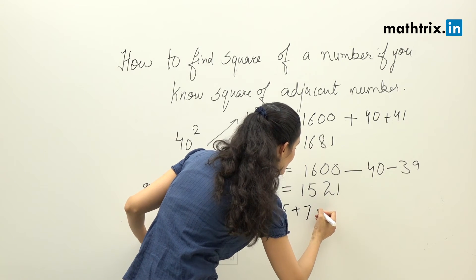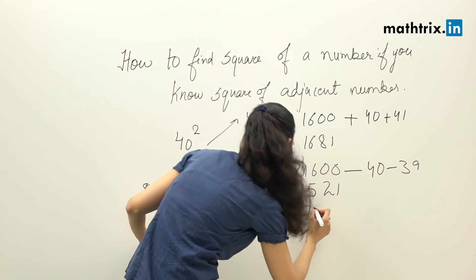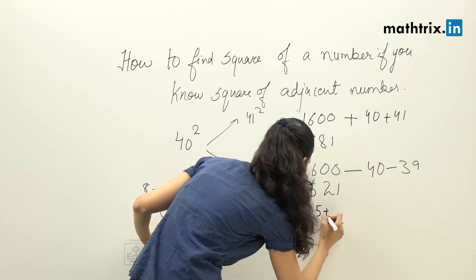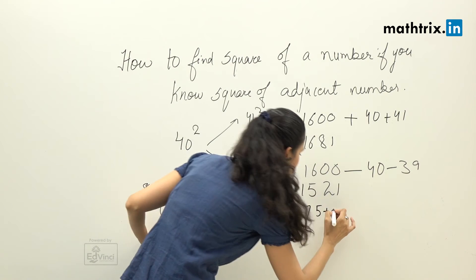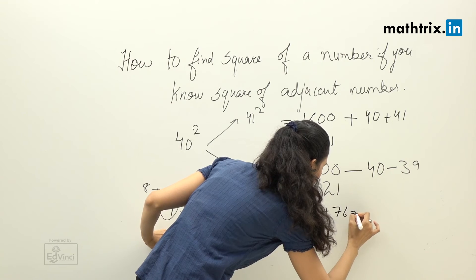We have to add 75, which is the adjacent number, and 76, the number itself. And the answer is 5776.